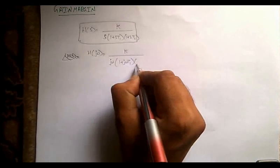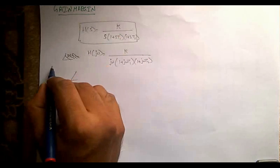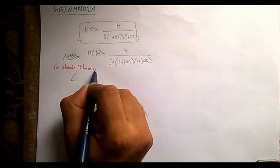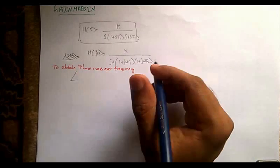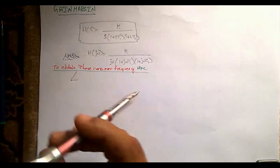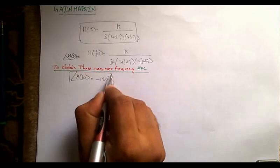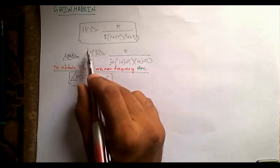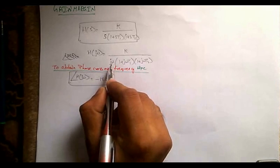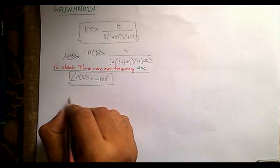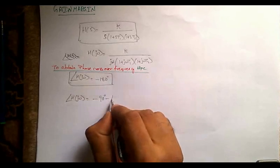So H(jω) equals K divided by jω times (1 + jωT1)(1 + jωT2). To obtain the phase crossover frequency ωpc, we set the angle of H(jω) equal to −180 degrees. We solve this equation to get the ωpc value. Note that since ω is in the denominator, when it moves up it contributes −90 degrees.